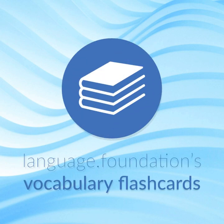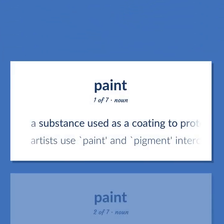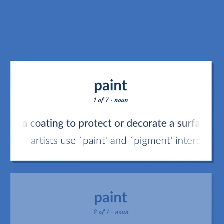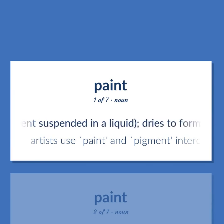Language Foundations Vocabulary Flashcards. Helping you achieve understanding. A substance used as a coating to protect or decorate a surface, especially a mixture of pigment suspended in a liquid, dries to form a hard coating.